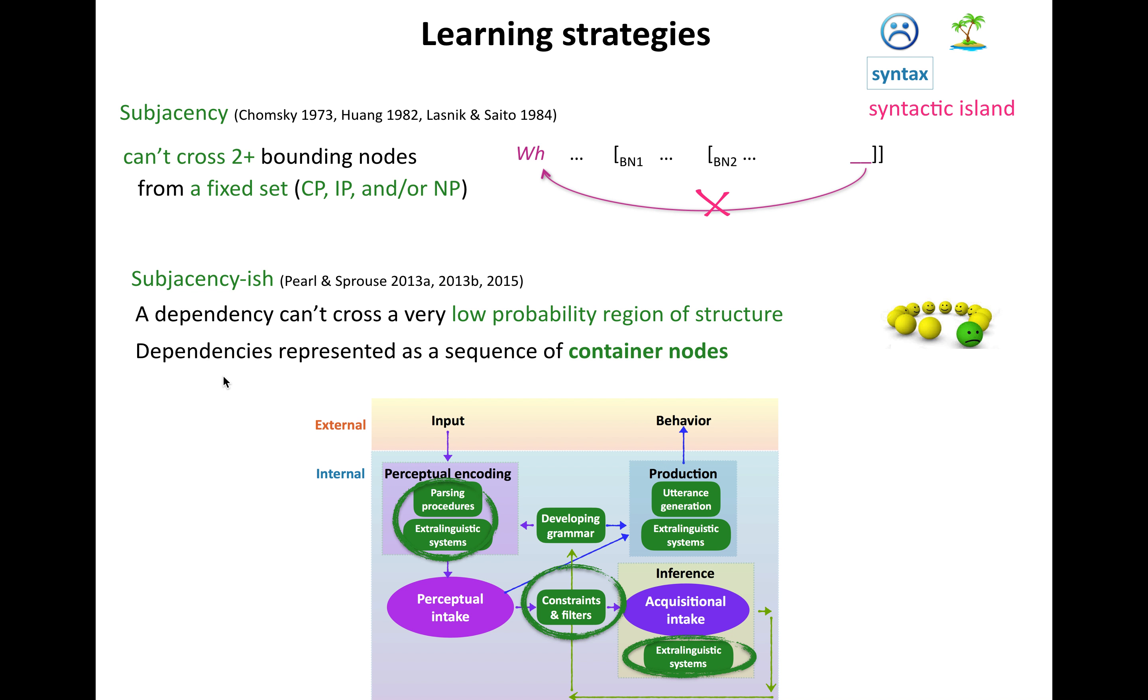So a more recent theory looked at something they called subjacency-ish for reasons that hopefully will become clear, but the idea was that a dependency can't cross a very low probability region of structure rather than being a fixed two or more is bad. But just if you hit a low probability region, that's sad. And the way that you think about regions of structure is as dependencies represented as a sequence of things which we'll call container nodes.